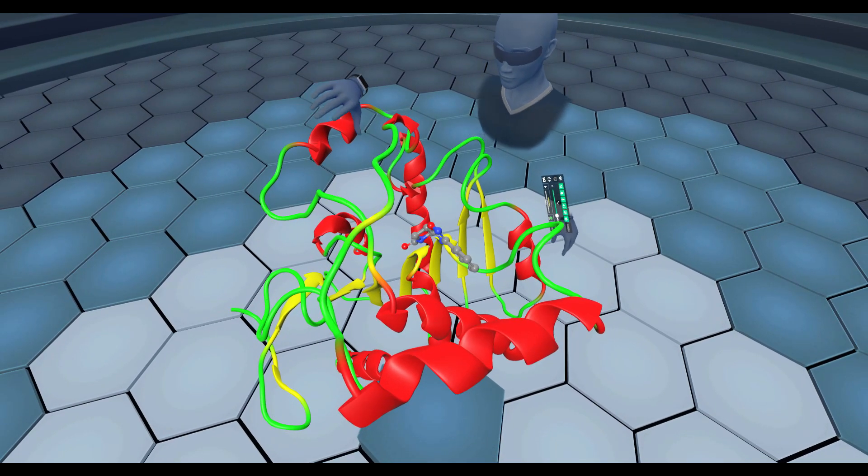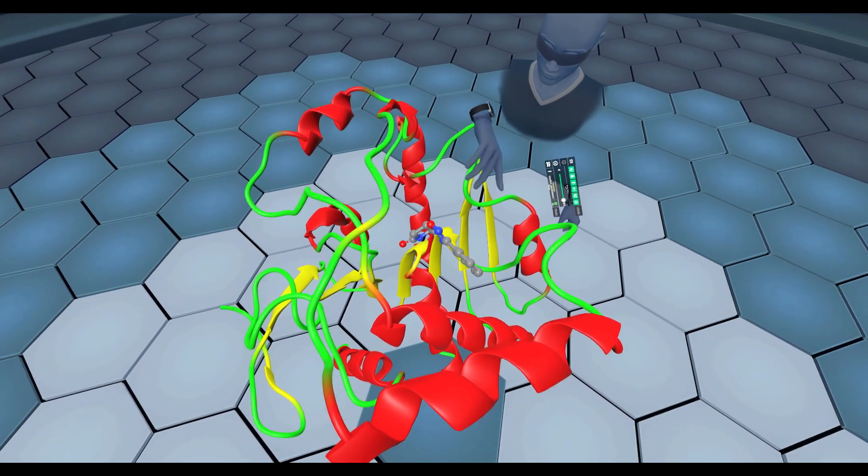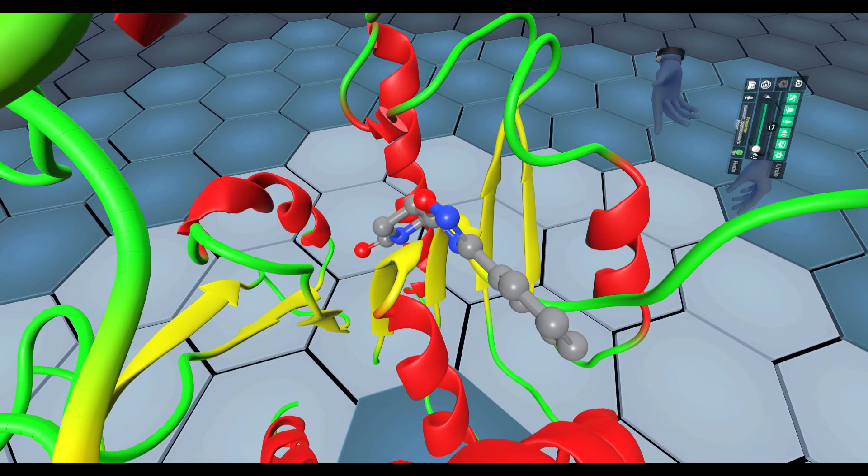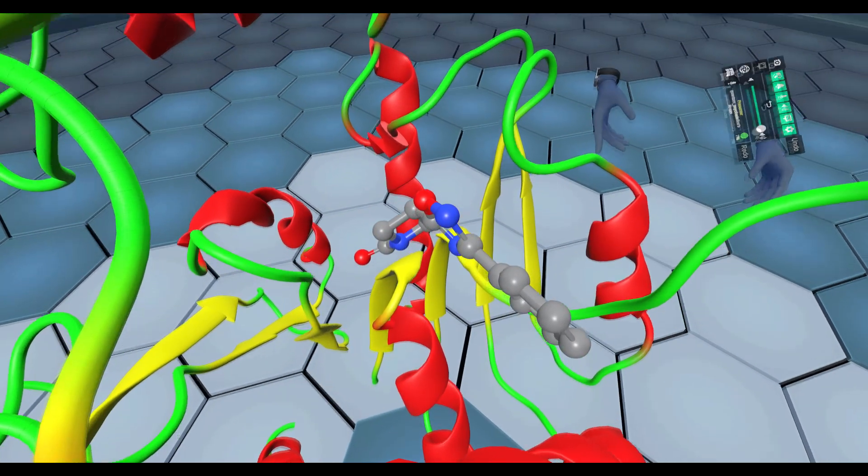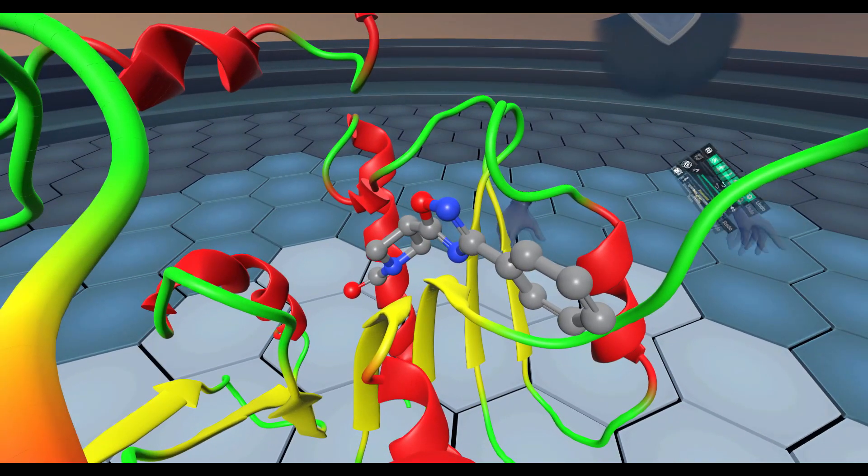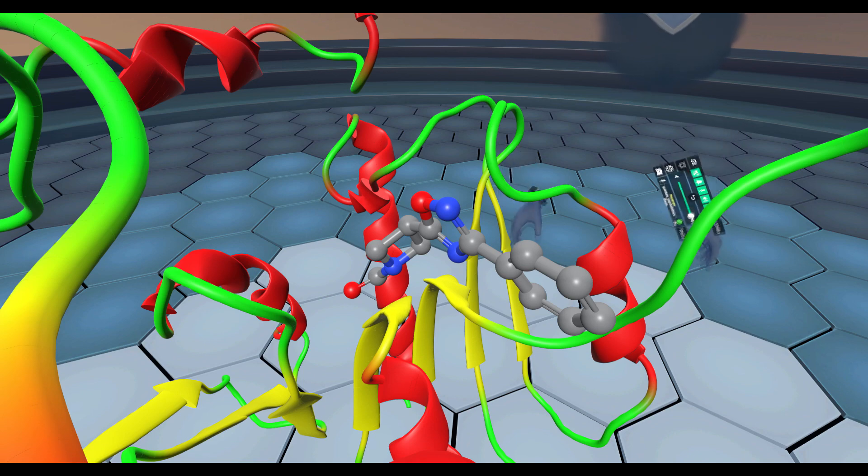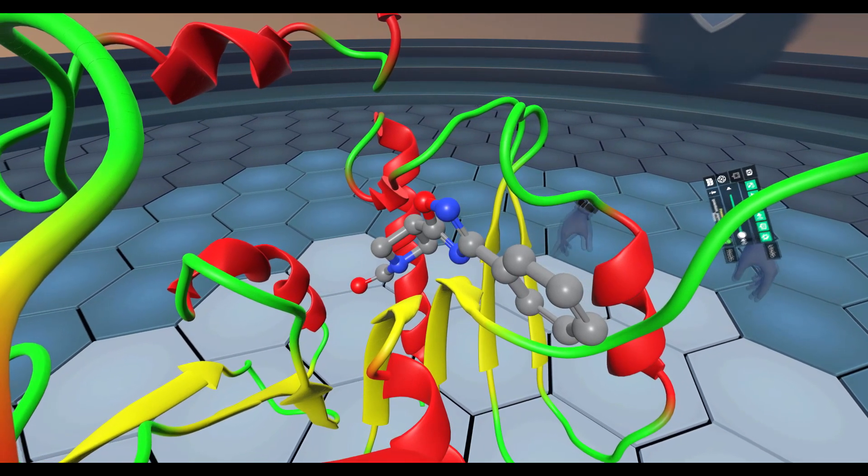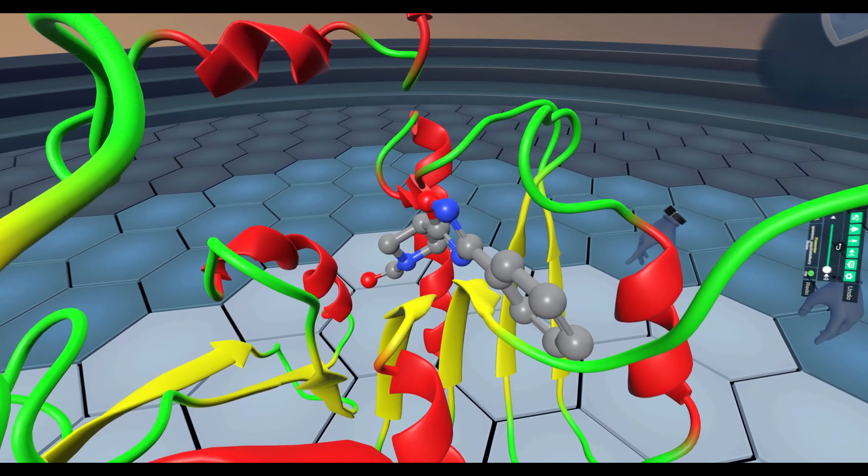It's the same story. 2-AG would come into the active site located right here, and there's usually a catalytic triad that'll use organic chemistry to work on one of the functional groups to cleave 2-arachidonylglycerol into two pieces, which will render it inactive, which can then be used to resynthesize 2-arachidonylglycerol and be reused inside of the body and the brain.